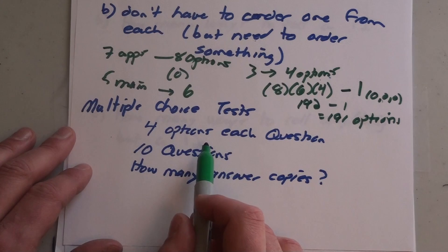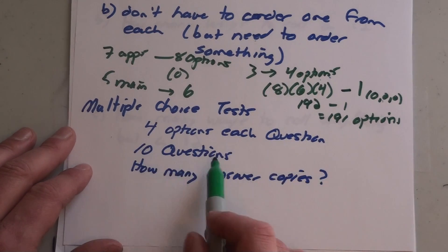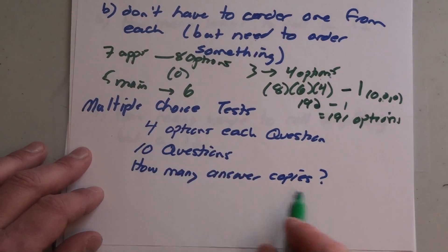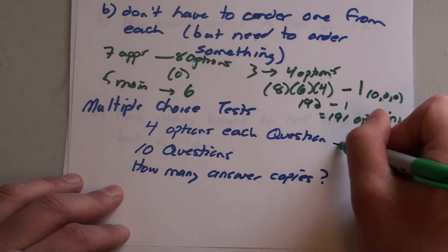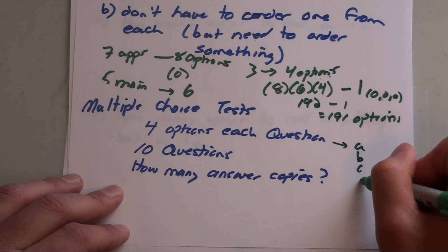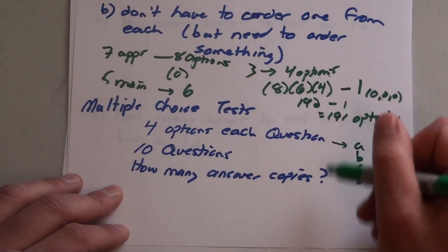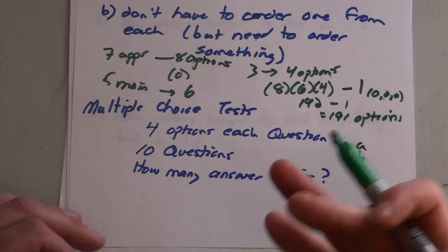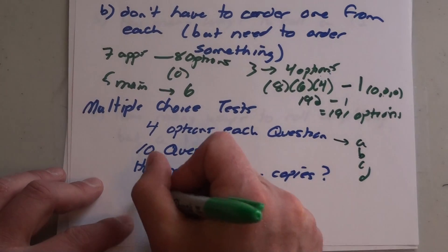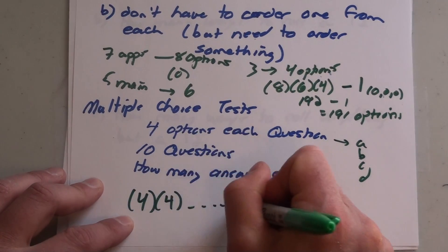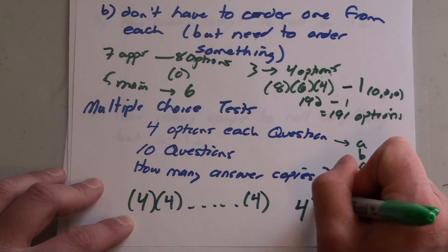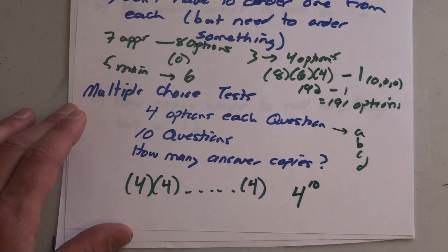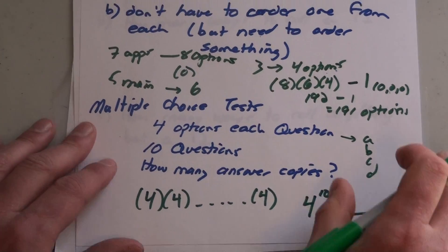Multiple choice test: you have four options for each question, 10 questions in total. How many total different answer copies could there be? You have four options for each question - could be A, B, C, or D - and you have all four. It's going to repeat itself each time: four for the first one, four for the second one, and you have 10 different times that's going to happen. So the total scenarios is four to the exponent of 10, which is going to be a very large number.